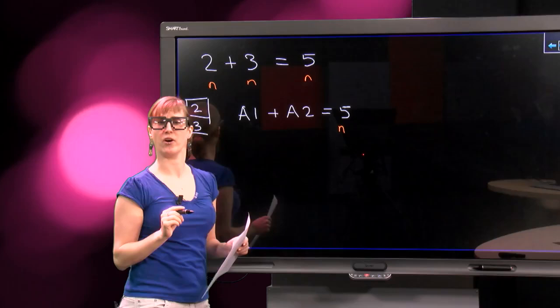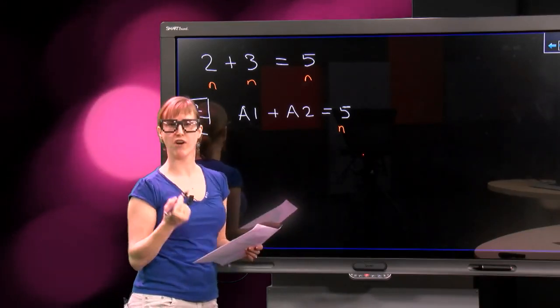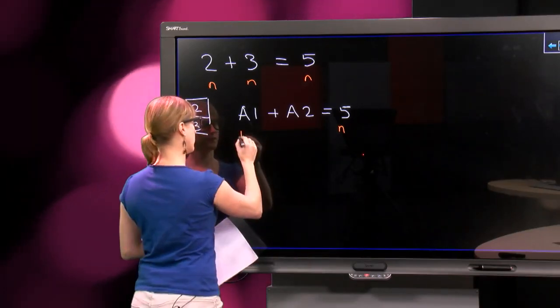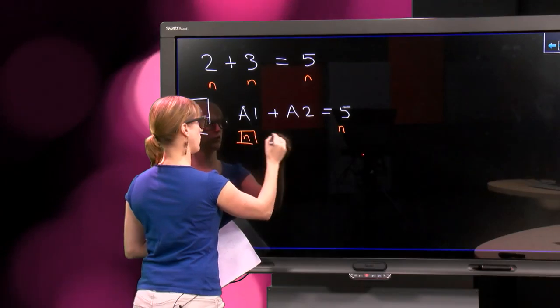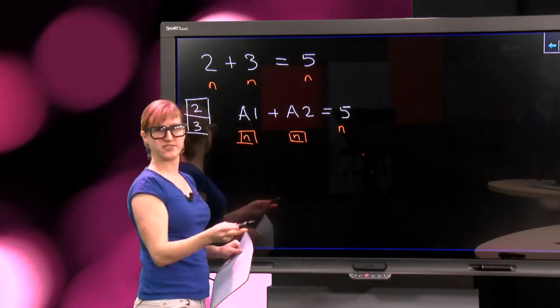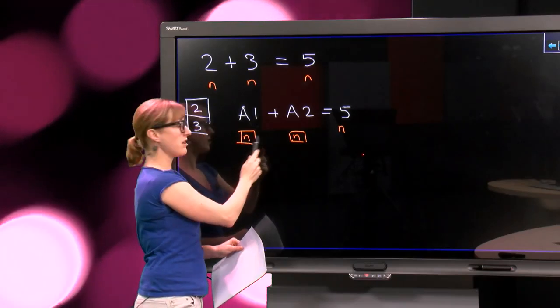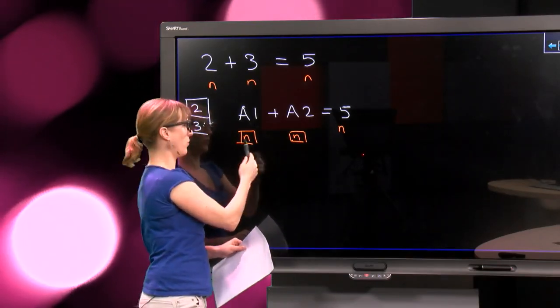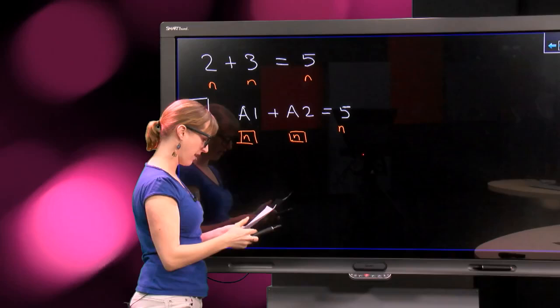But A1 is not a number, it's a cell, it's a reference to a number. So let's draw it like this, and say something that contains a number, and something that contains a number. We can add the numbers, and then we can get a number.